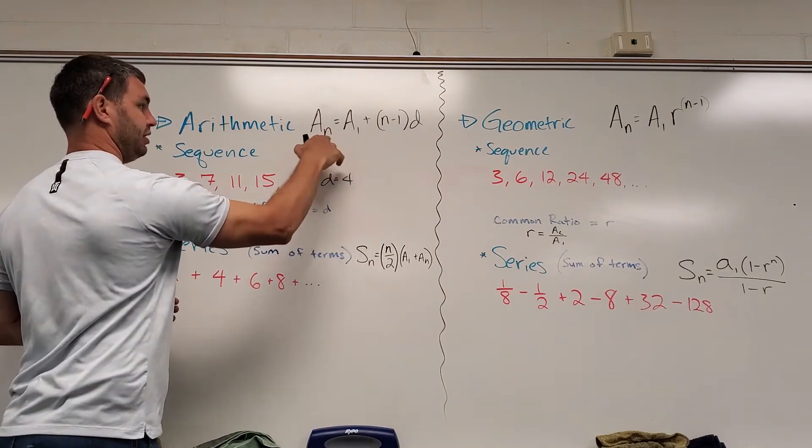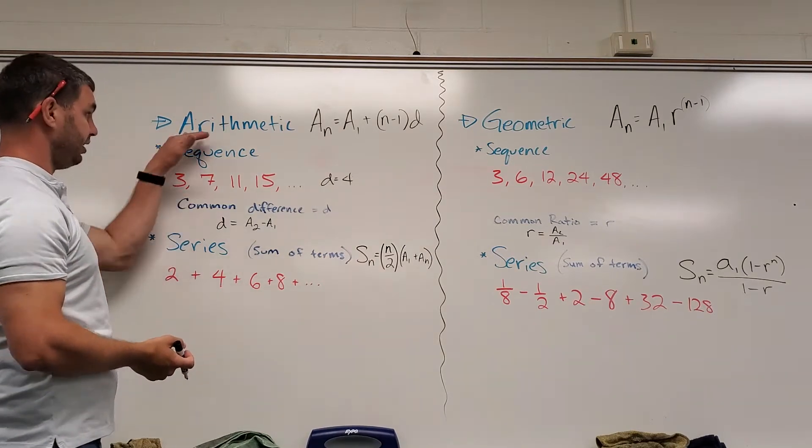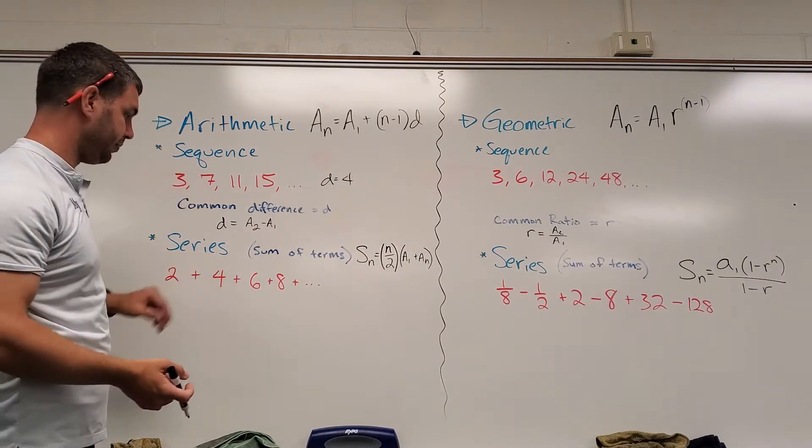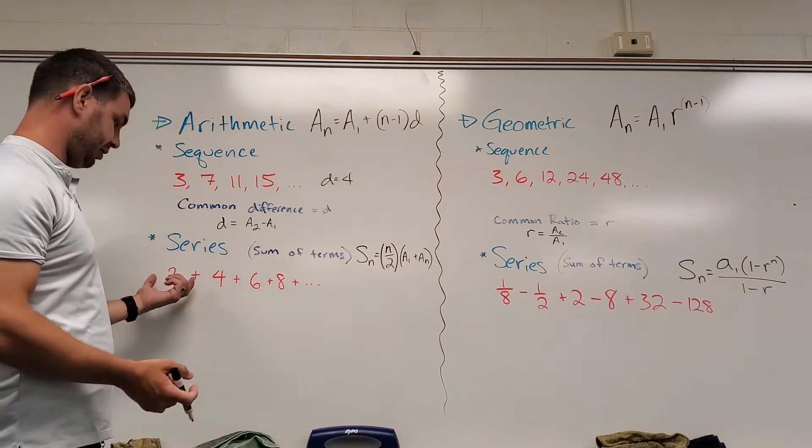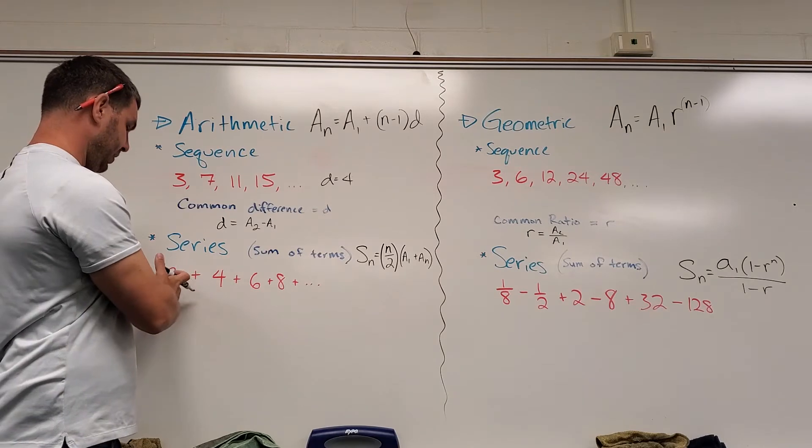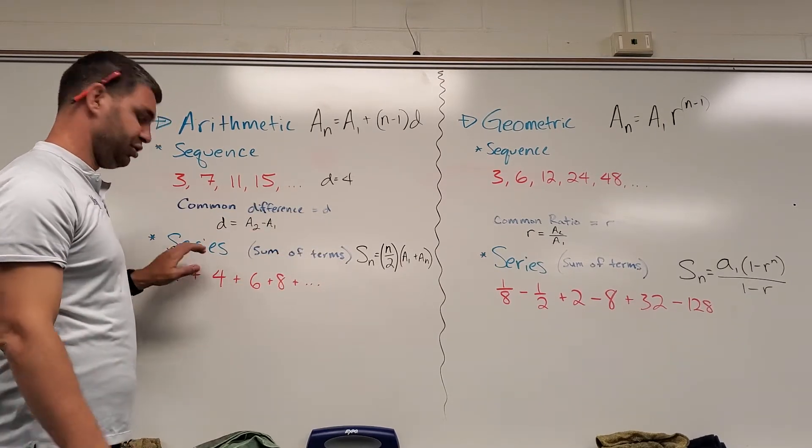An arithmetic series is the sum of those terms. So if we look at just the sequence 2, 4, 6, 8, but then I add those together—2 plus 4 plus 6 plus 8—that's going to give me the arithmetic series.